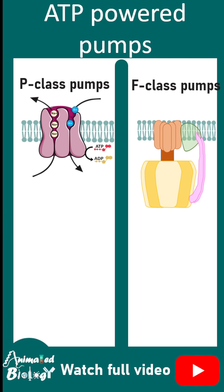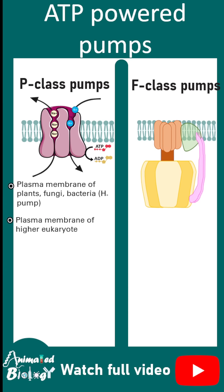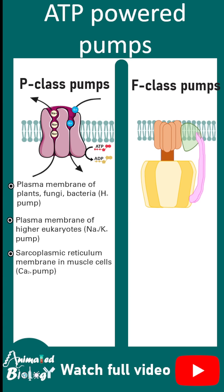First, we'll talk about P-class pumps. A classical example is sodium-potassium ATPase. They are found in the plasma membrane of plants, fungi, bacteria, and plasma membrane of higher eukaryotes, as well as the sarcoplasmic reticulum.